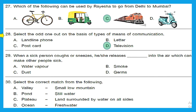Question 29: when a sick person coughs or sneezes, they release dash into the air which can make other people sick. They release germs — option D is the right answer. Germs are infectious agents released in the form of droplets when a sick person sneezes or coughs, and when a healthy person comes in contact with these droplets, they can fall ill.